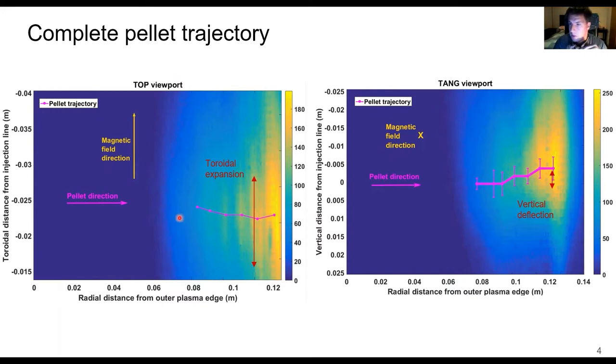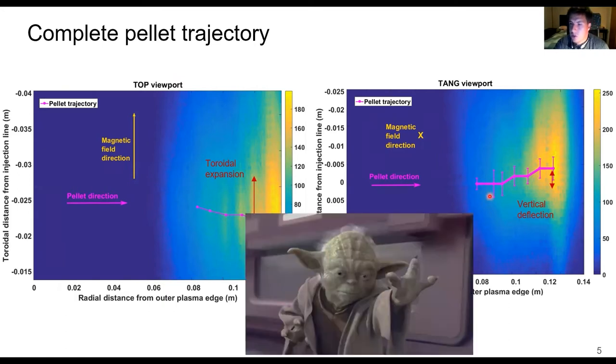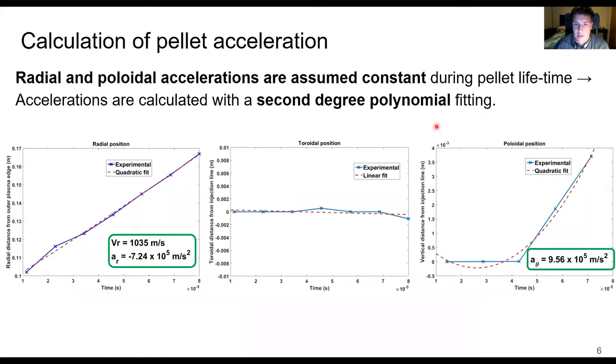As is shown here, where we have the toroidal, vertical and radial positions of the pellet. The most important observation here is that the pellet suddenly experiences a force that pushes it closer to the plasma core. And from these experimental trajectories and assuming a constant acceleration during the pellet lifetime, we can do a second-degree polynomial fitting of the experimental results to calculate the acceleration in the different directions.